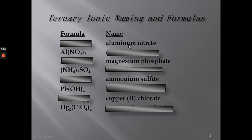Here we have an aluminum metal and a polyatomic ion nitrate. Aluminum is plus three. A nitrate polyatomic ion is negative one. Since I need these to cancel, the formula is going to have parentheses around the nitrate with a subscript of three, because three times negative one is negative three, and I have three of these to equal zero.